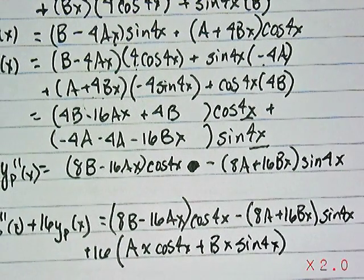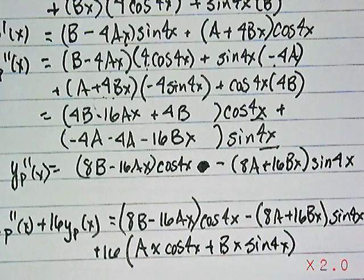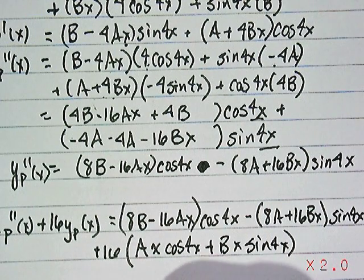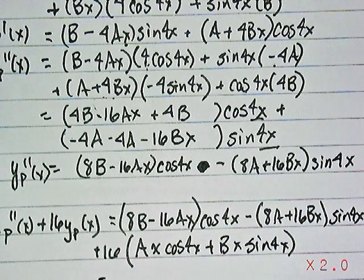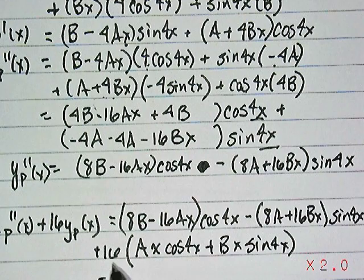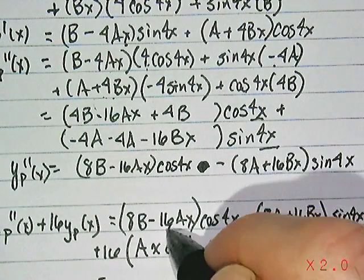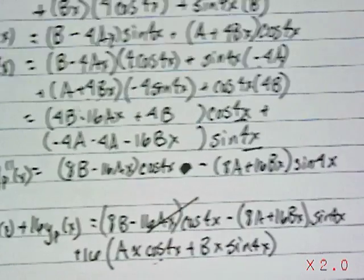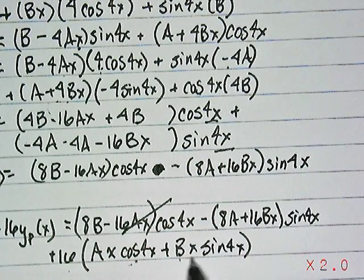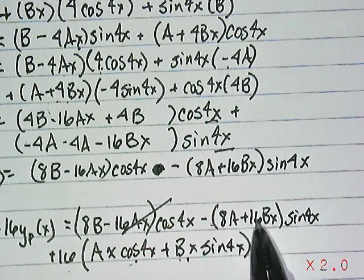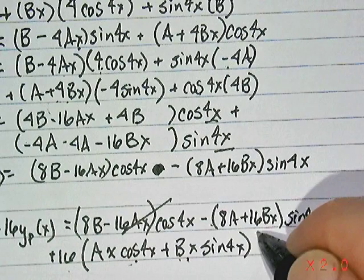And then to this, what we need to do is add 16 times the particular solution we're working with, which would be ax times cosine 4x plus bx sine 4x. So let's, again, gather terms here. See what's going to cancel out. So what we're going to get, if you look at these terms right here, you're going to have a 16ax times cosine 4x. That's going to wipe that term completely out. You're going to have a 16bx positive. There you're going to have the negative of it. That wipes out.